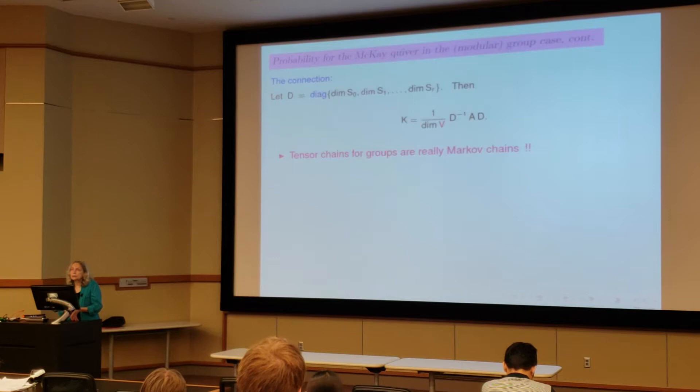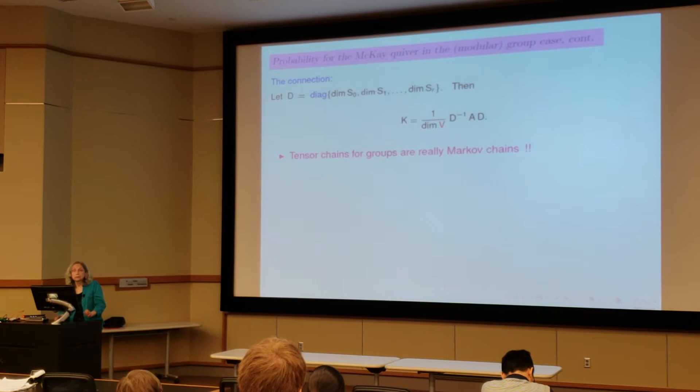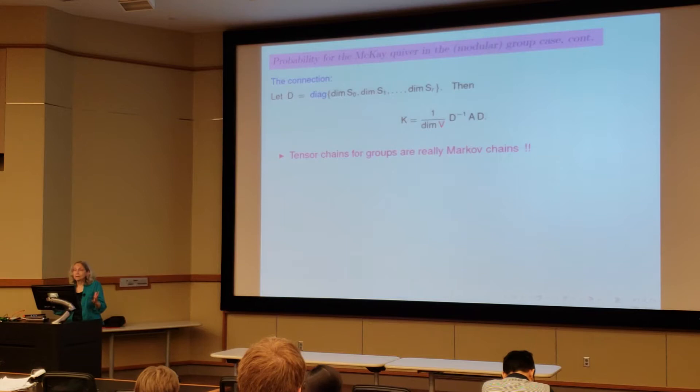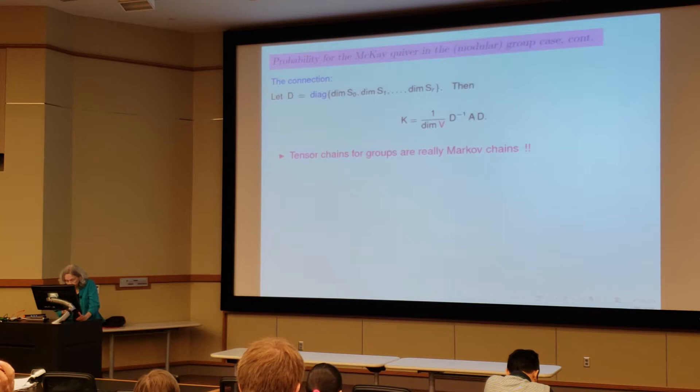And not only that, because we have this relation and such explicit information about the nature of A, we can actually compute K very easily. And remember A, we know all its eigenvalues and eigenvectors, even in the moderate case, the character values. So all these probabilities are just going to be in terms of character values.